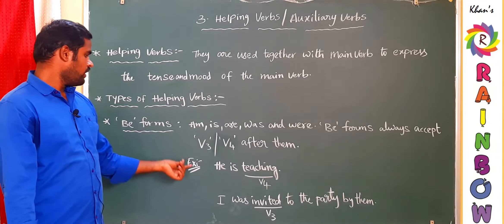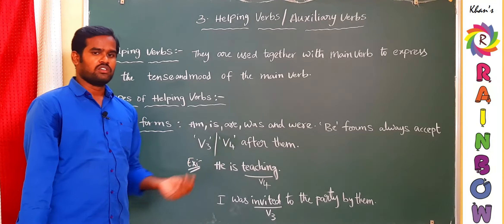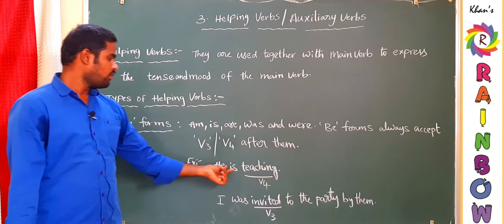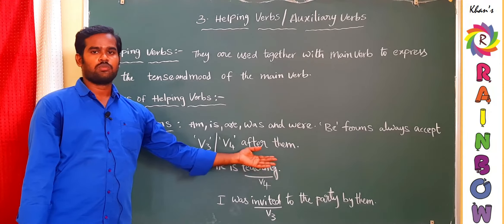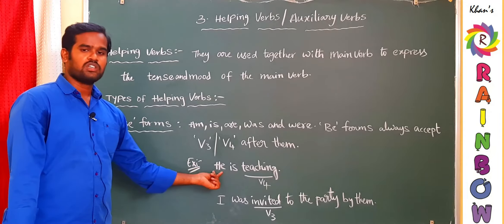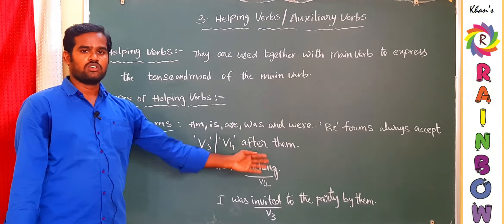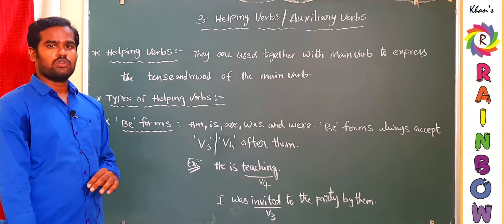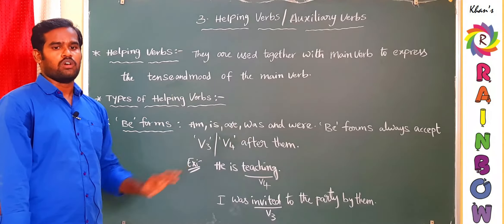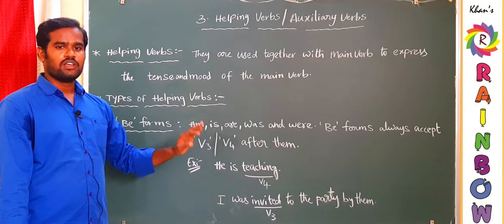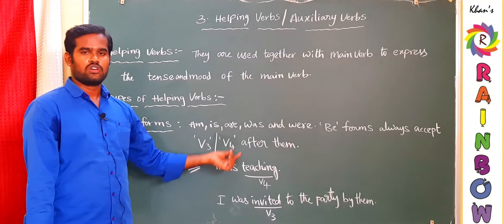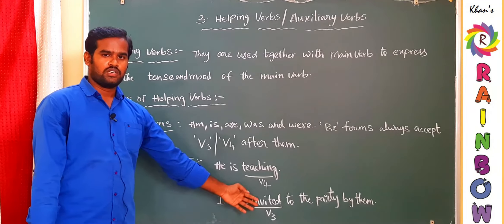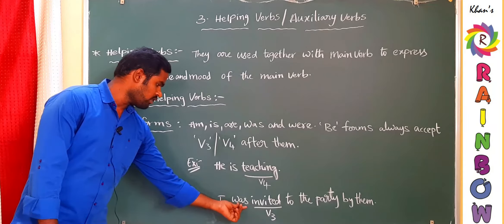The first example is 'He is teaching.' Here 'is' is the helping verb — a B-form. After 'is,' the verb is 'teaching,' which is present progressive, that is V4. The subject 'he' is doing the action, so it is active voice. In active voice we use V4. If the subject is doing the action, use V4; if the subject is receiving the action, use V3.